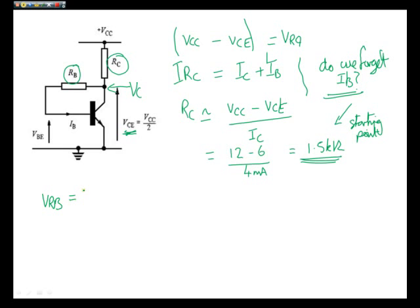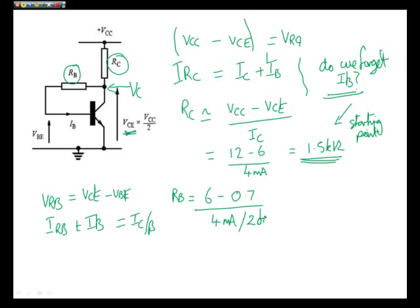So let's calculate RB. The volt drop across RB is equal to VCE minus VBE. And the current flowing in RB is equal to IB, which is equal to IC over beta. So let's put the numbers into that particular expression. We can now say RB is basically equal to 6 volts minus 0.7 VBE, all divided by the current flowing, which in this case is 4 milliamps divided by our value of beta, which was 200 in our initial design.